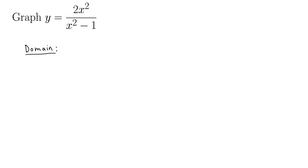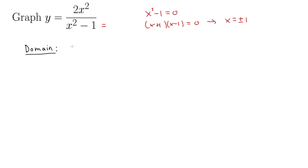We'll define the domain. Since this is a rational function, we'll simply set the denominator equal to 0 and solve. So we have x squared minus 1 equals 0, which we can factor as x plus 1 times x minus 1 equals 0, giving us x equals plus or minus 1. These are the points not in the domain, so the domain is negative infinity to negative 1, union negative 1 to positive 1, union 1 to infinity.